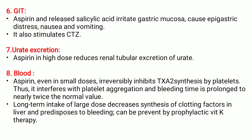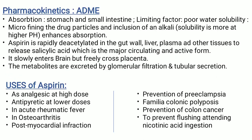Gastrointestinal tract: aspirin is released as salicylic acid, which irritates the gastric mucosa, causing epigastric distress, nausea, and vomiting. It also stimulates the CTZ. Regarding uric acid excretion, aspirin at high doses reduces renal tubular excretion of urate. In blood, aspirin even in small doses reversibly inhibits TXA2 synthesis by platelets. Thus, it interferes with platelet aggregation and bleeding time is prolonged to nearly twice the normal value. Long-term intake of large doses decreases synthesis of clotting factors in liver and predisposes to bleeding, which can be prevented by prophylactic vitamin K therapy.